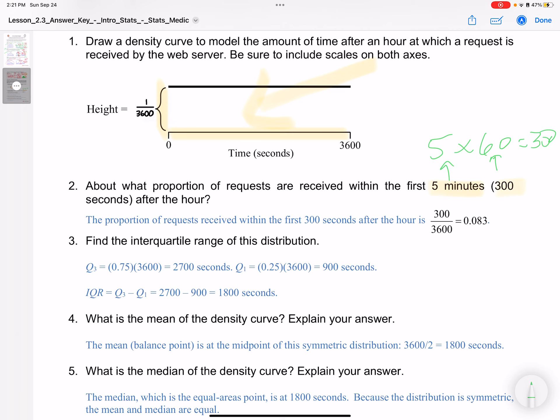We're going to look at after 300 seconds, which is about here. So we're looking for this area, and that's going to be 300 divided by 3600, and that's 0.083, which if we move the decimal over two times is about 8.3% of this shaded.